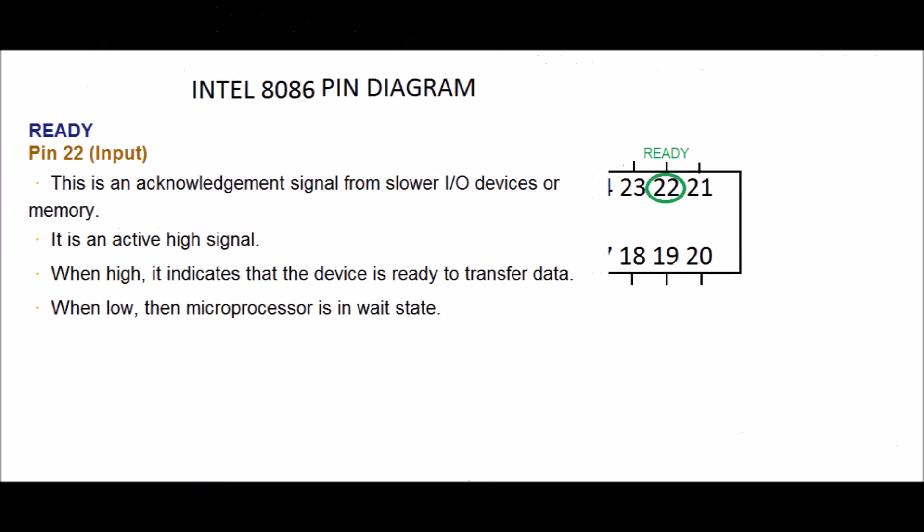Ready, PIN 22. Input. This is an acknowledgement signal from slower I/O devices or memory. Acknowledge signal means message signal. As the memory is slow, this PIN tells microprocessor that memory is slow to operate. As memory will be ready to transfer data, ready PIN goes high and microprocessor goes for memory access. It is an active high signal. When high, it indicates that the device is ready to transfer data. It transfers data from memory to microprocessor or vice versa.